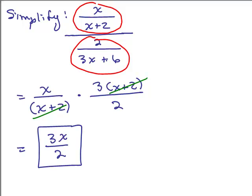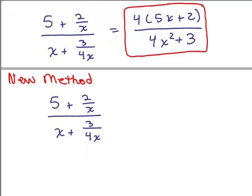Method 1 is especially easy when you already have single fractions in numerator and denominator. There's another method that some people find easier when you don't. I'm going to redo the problem we just did — (5 + 2/x) over (x + 3/4x) — using that new method. As a reminder, we got 4(5x + 2) / (4x² + 3) as our answer.